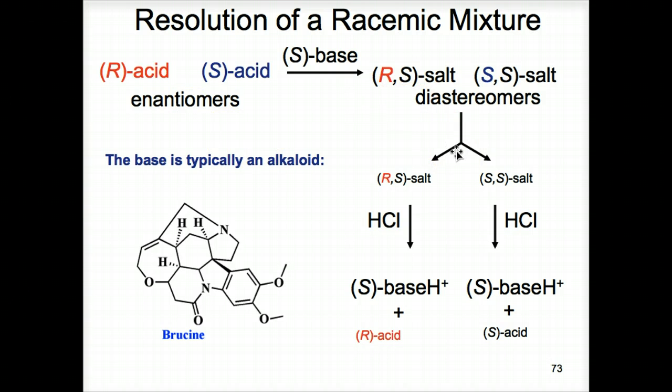Diastereomers can be separated from each other because they have different physical properties. After they're separated, the individual diastereomers are converted back into their original enantiomer form, as you can see depicted in the slide. Treatment of acid returns them to their enantiomeric form, and now they're separated. Here's R, and here's S. They were together. Now we have been able to separate them from each other. It's a very useful technique. They're not separated here, and they're separated here because we've converted them to diastereomers first.